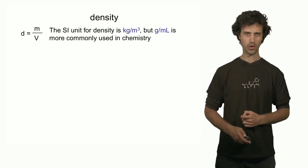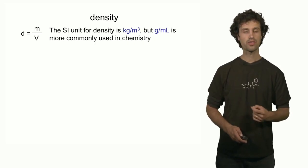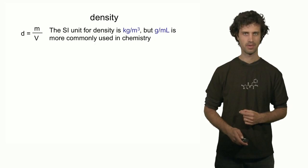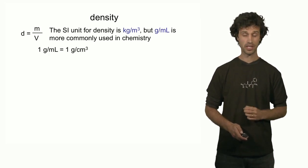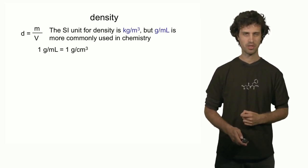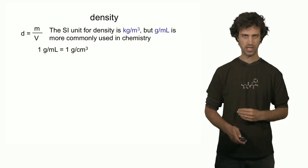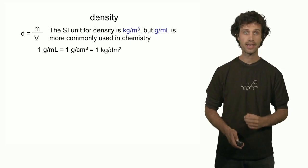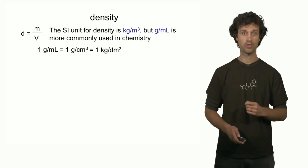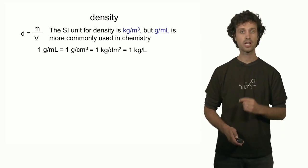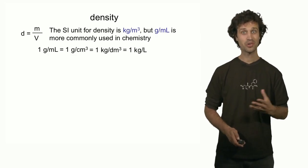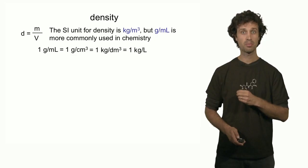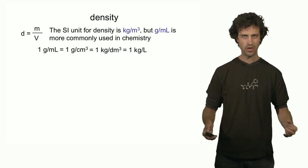Let's move on to density. Density is defined as mass over volume. In the SI system, the unit for density is kilograms per cubic meter. In chemistry, however, we often use grams per milliliter as a practical unit. One gram per milliliter corresponds to 1 gram per cubic centimeter. Multiplying both the grams and cubic centimeters by 1,000, we find that 1 gram per milliliter corresponds to 1 kilogram per liter — a very useful relation to keep in mind.